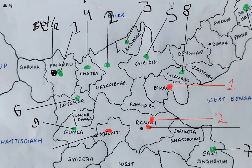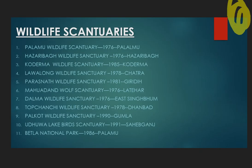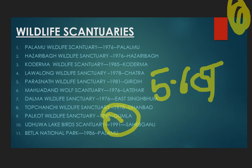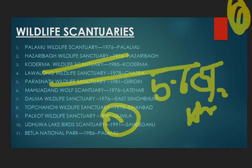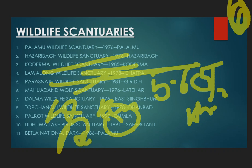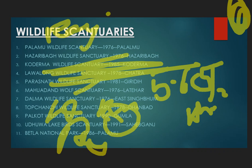Next is Udwa Lake Bird Sanctuary in Sahibganj, established in 1991. Its area is 5.65 square kilometers, situated on the bank of the Ganga River, about 10 km from Rajmahal in Sahibganj district.